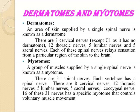What is a dermatome? It is an area of skin which is supplied by a single spinal nerve. There are eight cervical nerves except C1 which doesn't have a dermatome, 12 thoracic nerves, 5 lumbar nerves and 5 sacral nerves. Each of these spinal nerves relays sensation from a particular area of the skin to the brain.